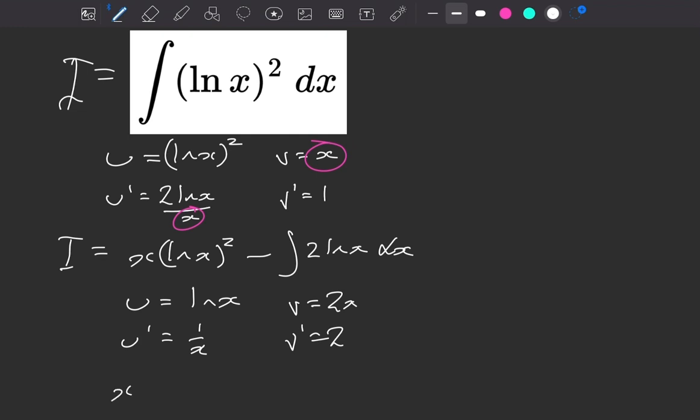So we'll have still the x times the square of the natural log of x come down with us. And then we'll integrate, we'll take away, sorry, the natural log of x times 2x. So we'll have 2x log of x. And then plus, if I'm doing a minus minus,